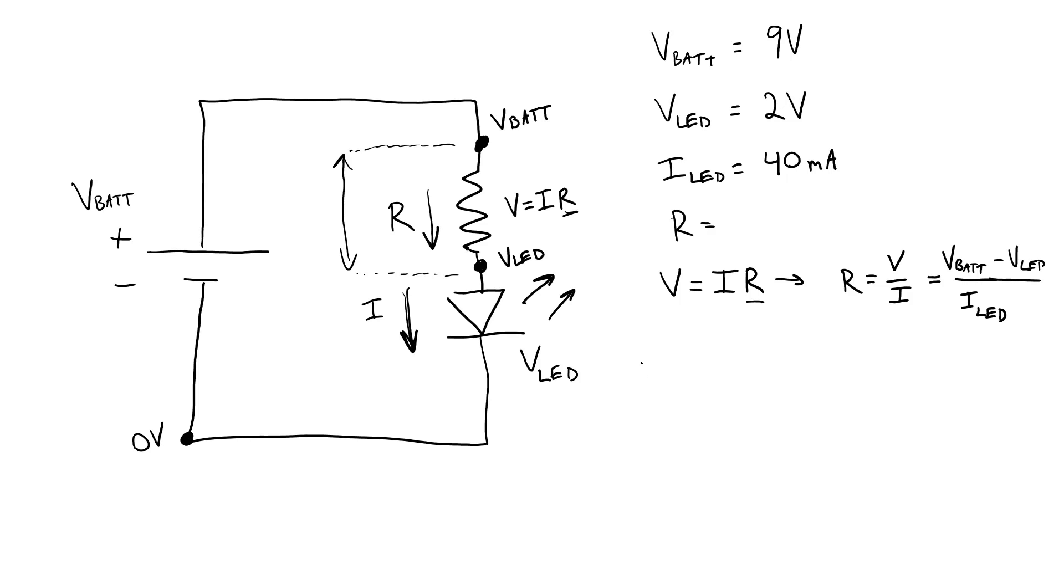So there we have our equation to calculate the resistor value. We have the resistor value R equals the battery voltage minus the forward voltage drop across the LED divided by the desired current through the LED. So in this case, we can plug in our known values to solve for the resistor, where we have battery voltage of 9 volts minus the LED voltage of 2 volts divided by the current. And I have to be careful about my units here. Note that this is listed in milliamps, but I'm going to convert that to amps when using this equation so my units are consistent. So 40 milliamps is 0.04 amps.